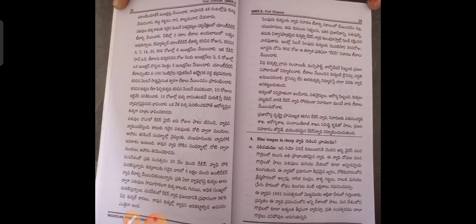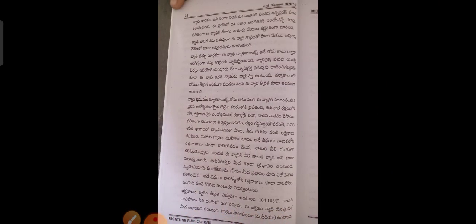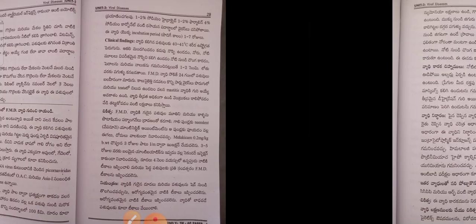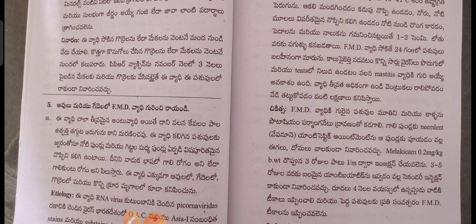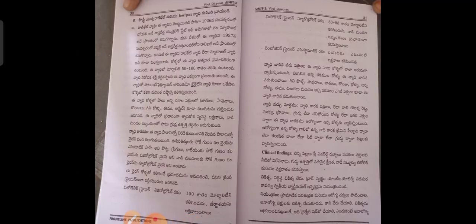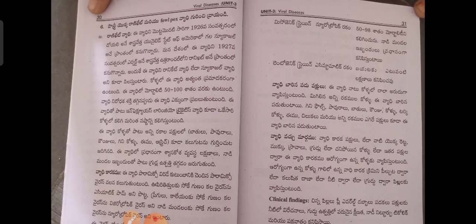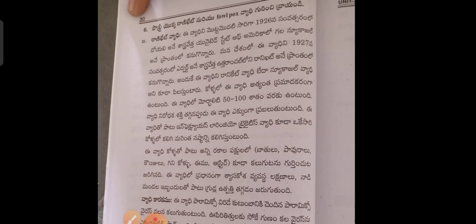Blue Tongue in sheep, Black Quarter in sheep. Fourth Unit: Protozoan Vyadhi — Protozoan Diseases.